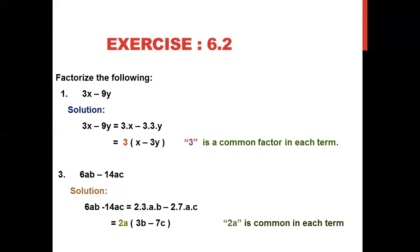Question 1: Factorize 3x - 9y. Now, 3x means 3×x. The dot means product, not decimal. I make the factor of 9: that is 3×3. So we write 3·x minus 3·3·y. Now you can clearly see that 3 is common in both terms — 3 is with x and also 3 is with y. No variable is common, only the constant 3. So we take 3 common: 3(x - 3y). And we mention that 3 is the common factor in each term. Our answer is 3(x - 3y).